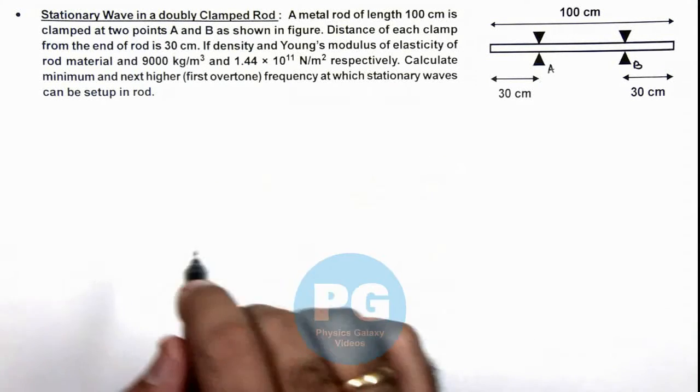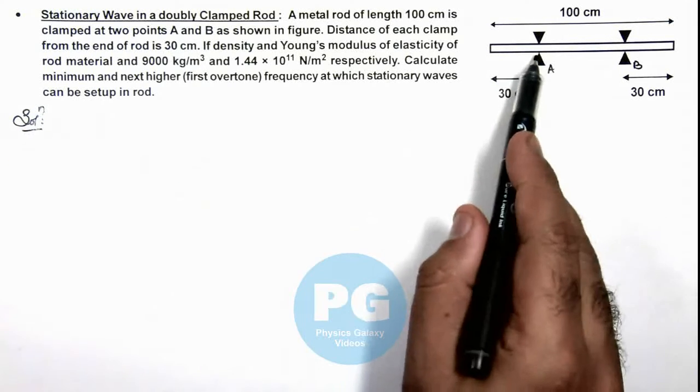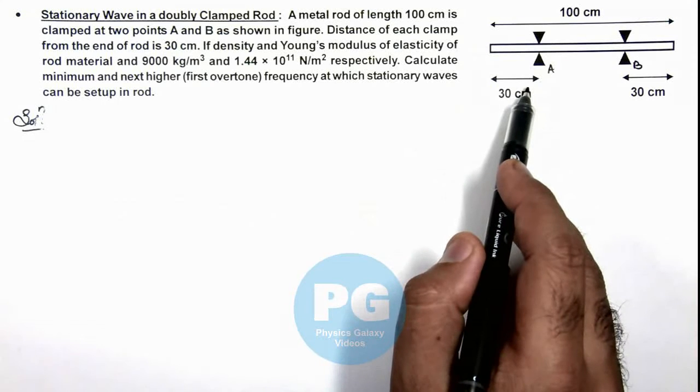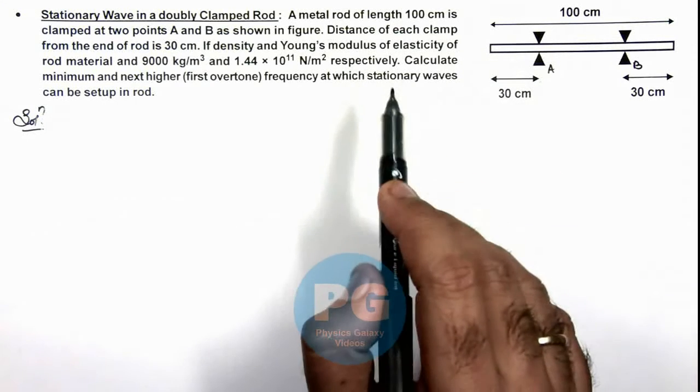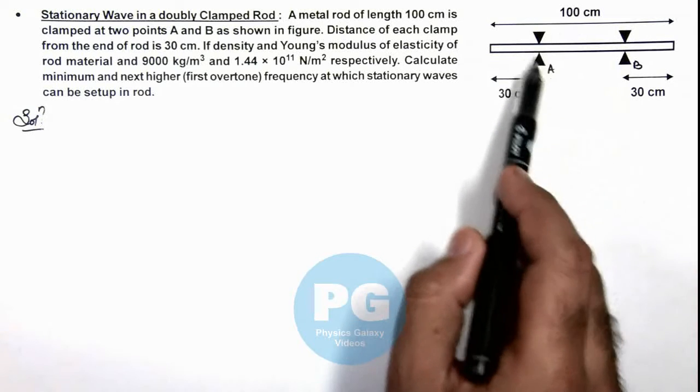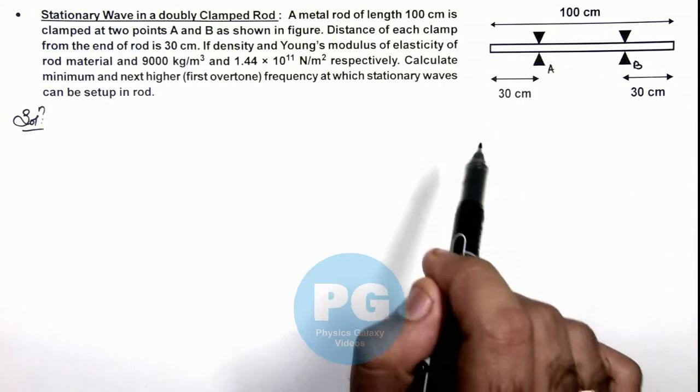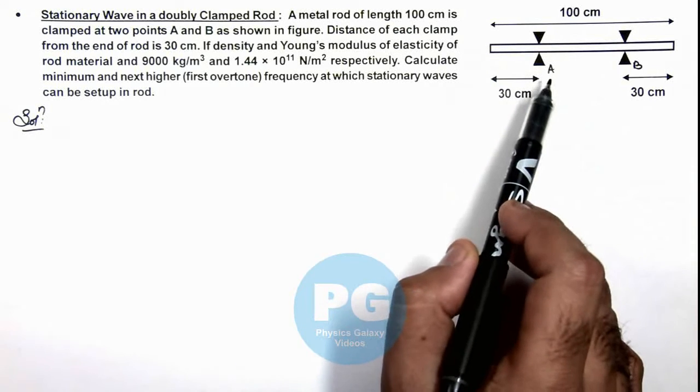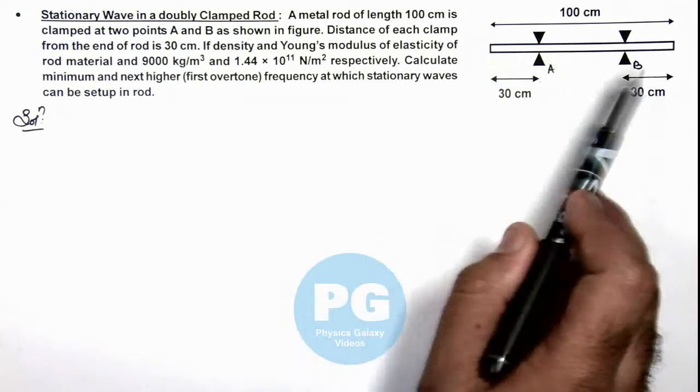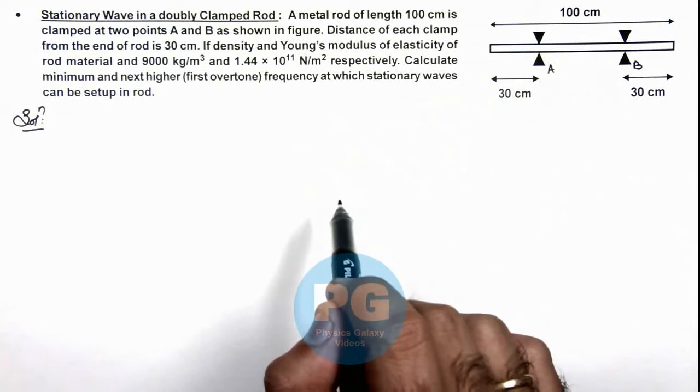Now for this case, we first analyze the ends of the rod which are clamped at one point and other end is open, of length 30 centimeter. If this will oscillate, what will be its fundamental frequency? And separately we calculate the middle section of rod and we find its fundamental frequency and all harmonics. So wherever the frequency at which left, right ends, as well as middle end will have stationary waves, then only this rod will be oscillating in form of stationary waves.